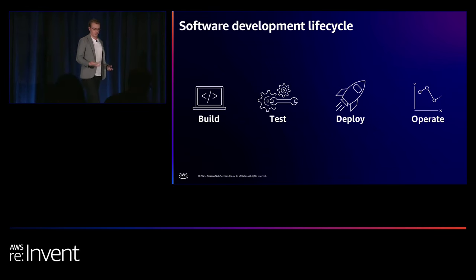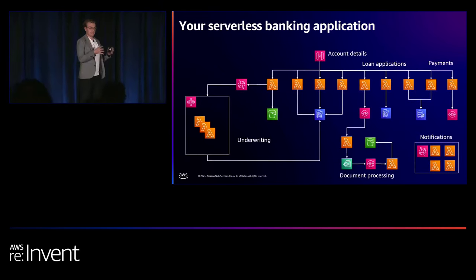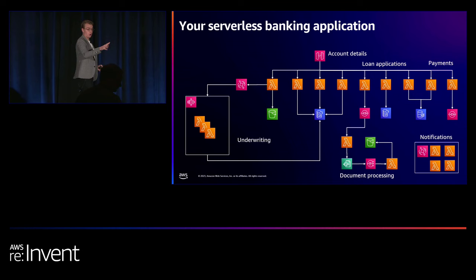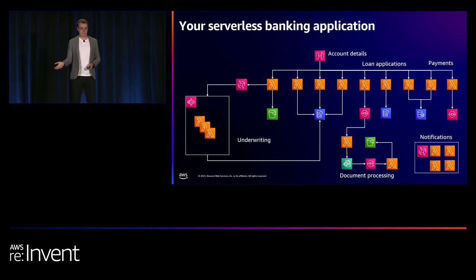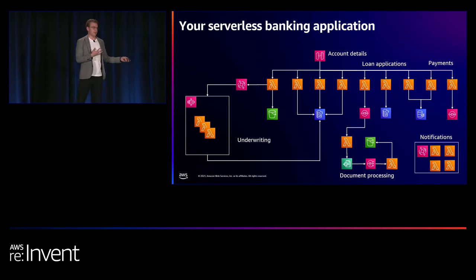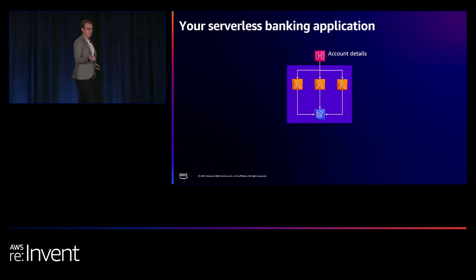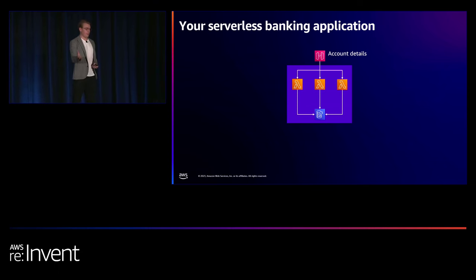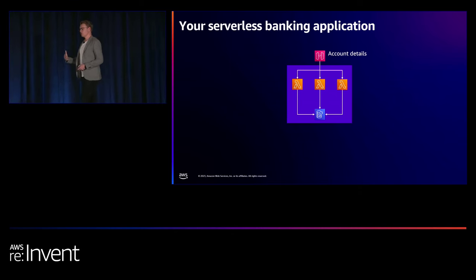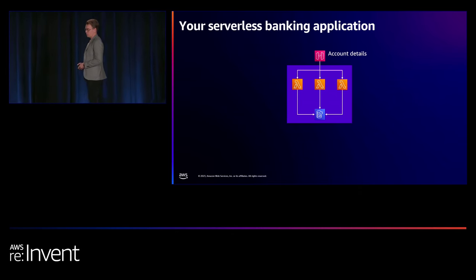We're going to look at those differences within the context of an existing application. For the rest of this talk, you are all developers working for a completely fictional bank. You need to build out a web API backed by Lambda with data stored in DynamoDB. Nice and simple. And we're going to start walking through how Lambda actually differs from your traditional model.